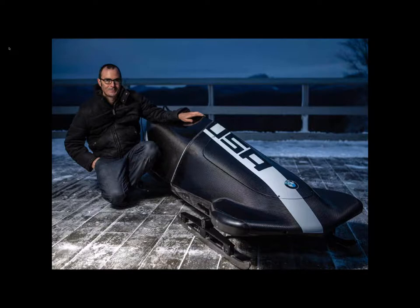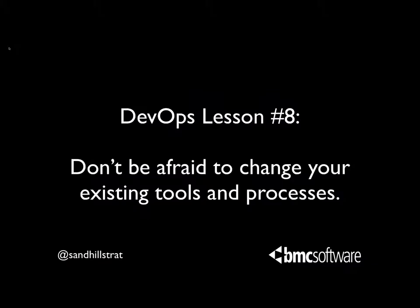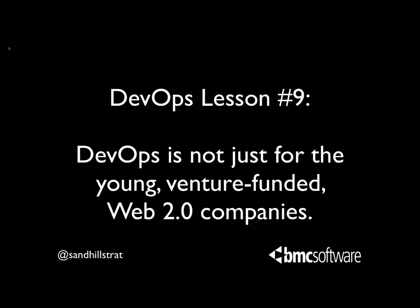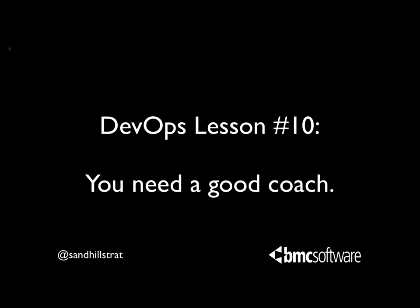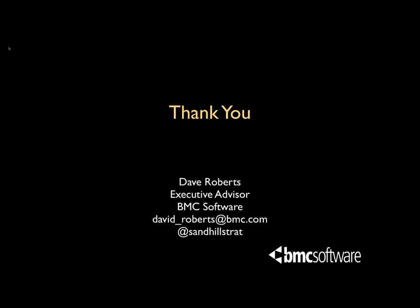Remember Michael Scully and the bobsled team — DevOps lesson number eight: don't be afraid to change your existing tools and process. Throw out everything you've got, go back to basics, look at things end to end and redesign from the ground up. Remember Ole Einar Bjørndalen, the 40-year-old who beat a 26-year-old at biathlon — DevOps is not just for the young, venture-funded Web 2.0 companies. Even brick-and-mortar companies can do DevOps well, but it's going to take more calories. Remember Davis and White, Virtue and Moir, and Marina Zueva — DevOps lesson number ten: you need a good coach. If you adopt these fundamental lessons, you can achieve DevOps gold.